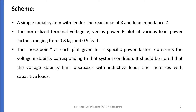A simple radial system with feeder line reactance X and load impedance Z is considered here. The normalized terminal voltage V vs P, i.e. the PV plot, at various load power factors ranging from 0.8 lag to 0.9 lead are shown in the figure.